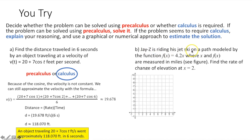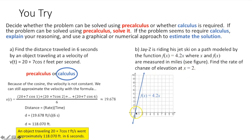Part B says Jay-Z is riding his jet ski on a path modeled by f(x) = 4.2x, where x and f(x) are measured in miles. Find the rate of change of elevation at x = 2. We graph f(x) = 4.2x, which is in slope-intercept form y = mx + b, where m is our slope 4.2 and b is our y-intercept 0. In the previous example, we couldn't find the exact rate of change because the function was curved. But here we have a straight line, which means its rate of change is the same throughout.